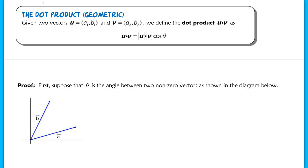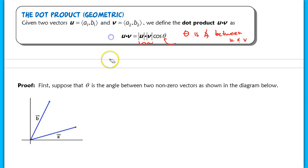Now we're going to use a different definition: the geometric interpretation of the dot product. Here, u·v equals the product of the lengths of u and v multiplied by the cosine of the angle theta between the two vectors. You'll have to decide which definition to use based on context — if you need an angle, use the geometric form; if you have components, use the algebraic form.